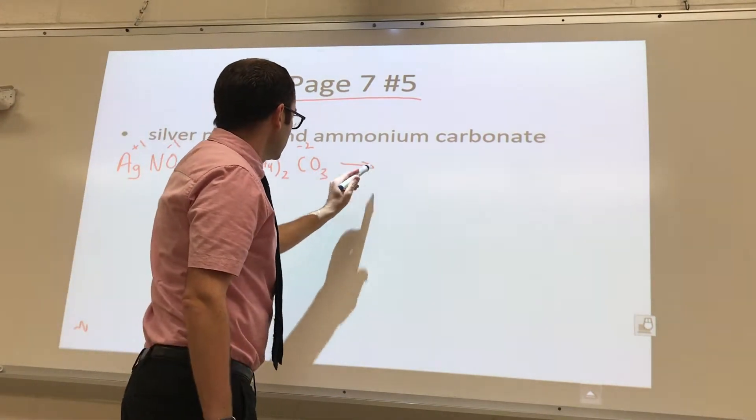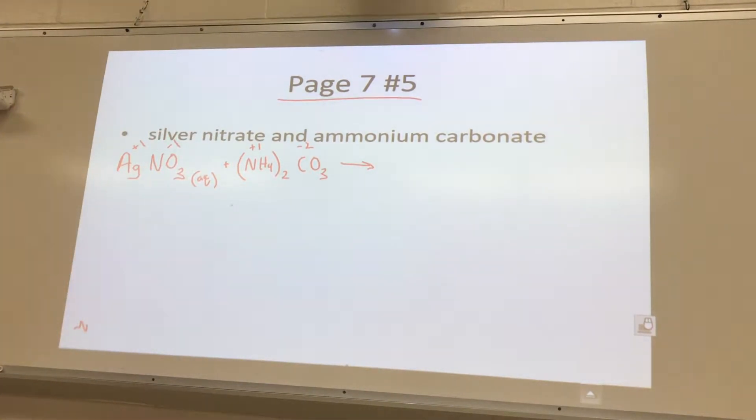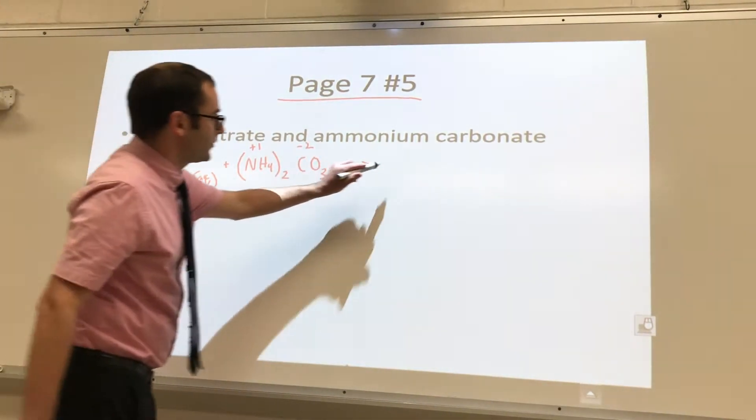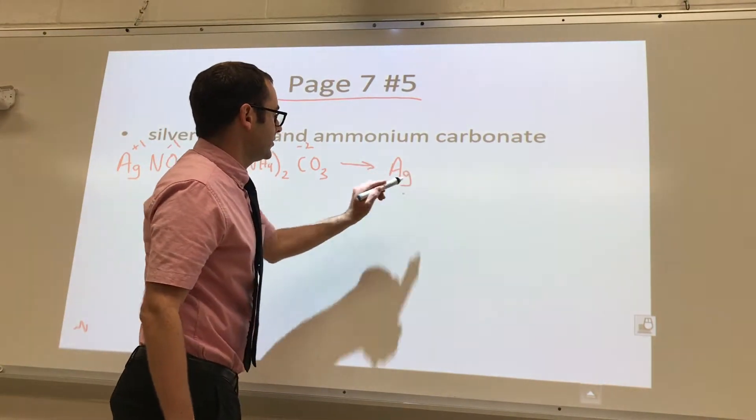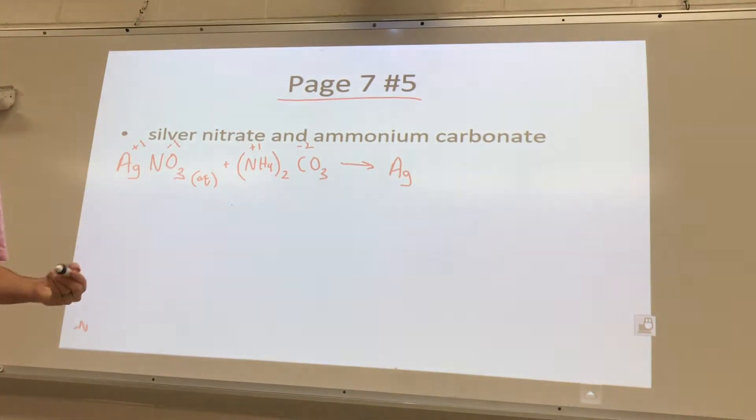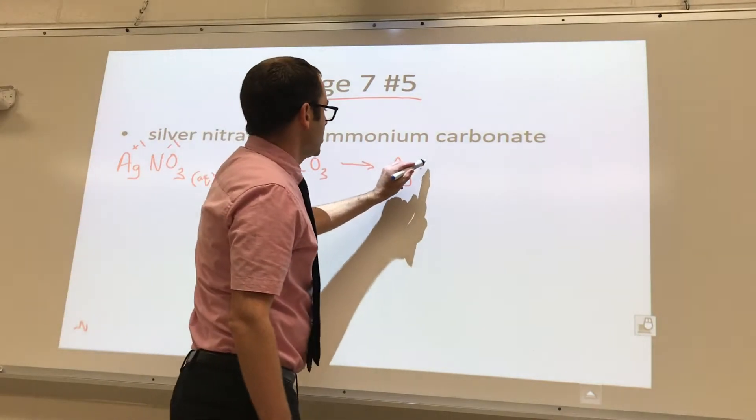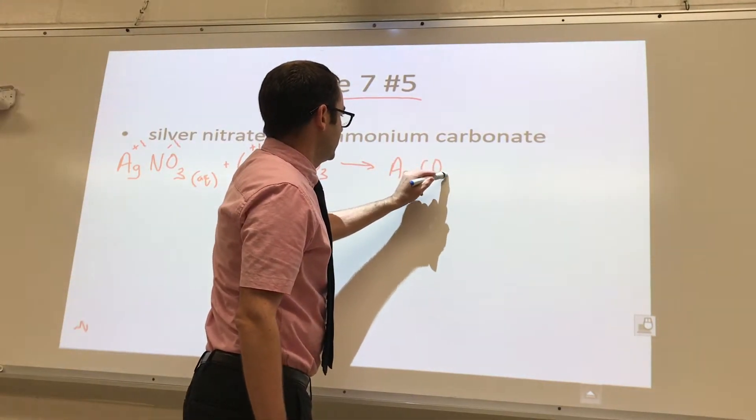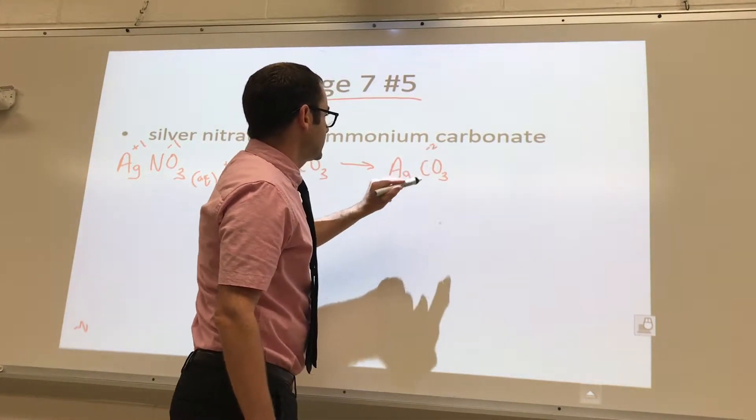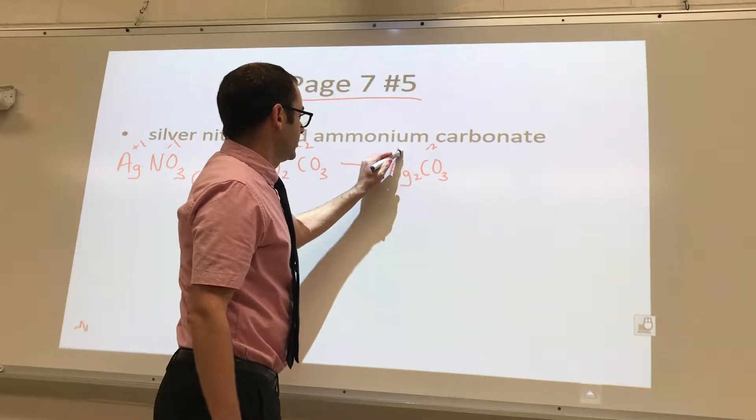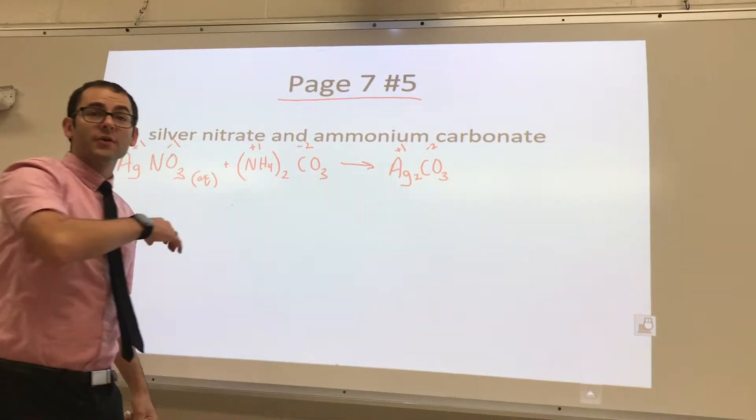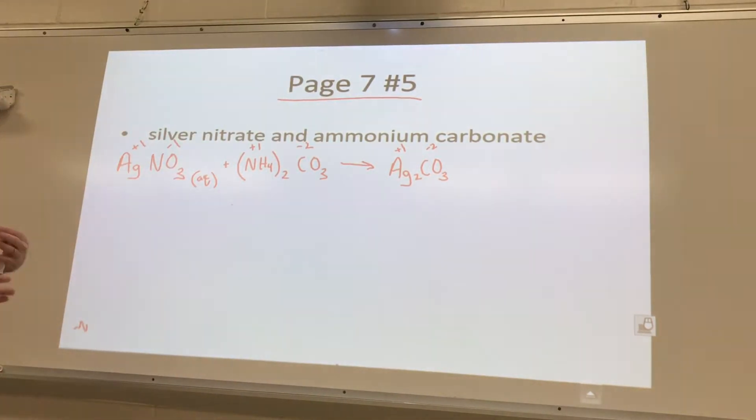So then we go to the other side. What's silver going to be paired with on the other side? Carbonate, yeah, carbonate. And carbonate's charge is minus two. So if that's minus two, we need two of these silvers. So that balances that out, good.